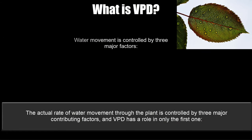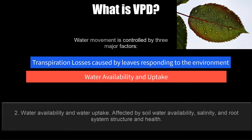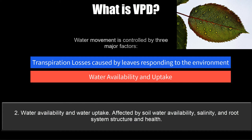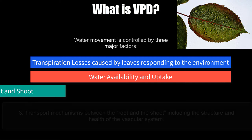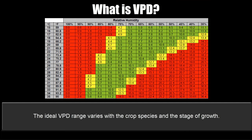The actual rate of water movement through the plant is controlled by three major contributing factors, and VPD has a role in only the first one. First, transpiration losses caused by the leaf responding to the environment — contributing factors include VPD, temperature, solar radiation, wind speed, and CO2 levels. Second, water availability and water uptake affected by soil water availability, salinity, and root system structure and health. Third, transport mechanisms between the root and the shoot, including the structure and health of the vascular system. The ideal VPD range varies with the crop species and the stage of growth.